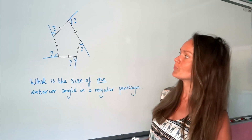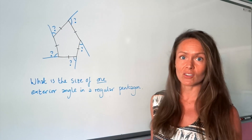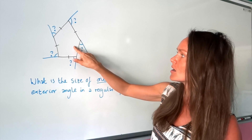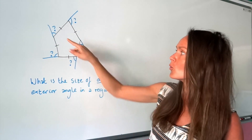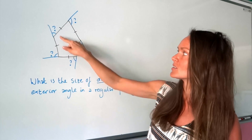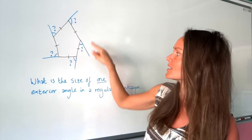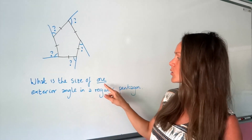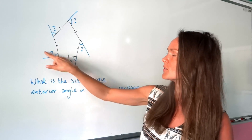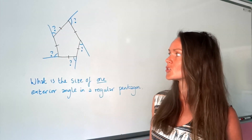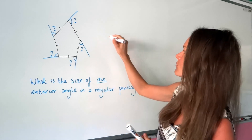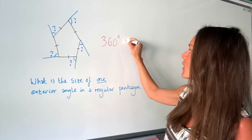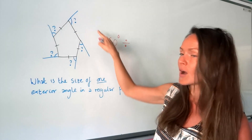So in this question, we've got a regular pentagon. A pentagon is just a five-sided shape, and regular means that all of the lengths are the same, and it also means all of the angles are the same inside the shape, which also means all of the exterior angles are equal in size too. So if we have to work out the size of just one of these exterior angles, what you need to do is divide 360 degrees — because that's the total, that's what they add up to — by the number of angles there are.